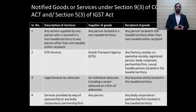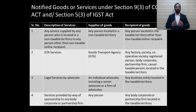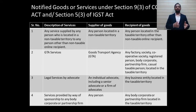The next is goods transport agency. A GTA supplying service of goods transportation to a business entity — be it a partnership firm, body corporate, a cooperative society, or a registered person under GST — reverse charge is applicable. Next is services provided by an advocate, a senior advocate, or a firm of advocates. Whenever you take legal services from an advocate, you will be responsible for paying the GST.